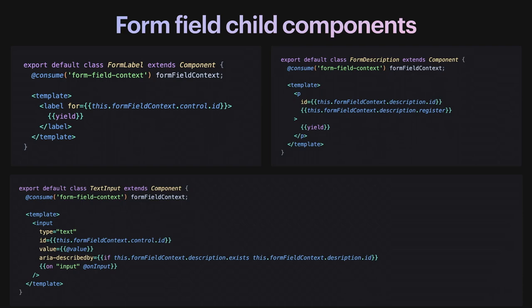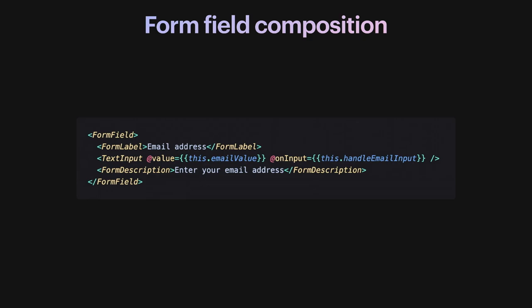The individual form components consume the form field context and set the necessary attributes. The description component attaches the modifier we made available in the form field, which lets the form field context know the description has been rendered — which the input then uses to render the 'aria-describedby' attribute. When we consume these components, we don't have to worry about any of these internals. We just render them, and because the form label and text input are nested within form field, all the context is doing the setup for us. This is already accessible without doing anything extra. As a developer, I can compose these components in whatever order or shape I want, add any wrappers I need for styling, rearrange them, and they'll always work the same if nested within the form field.